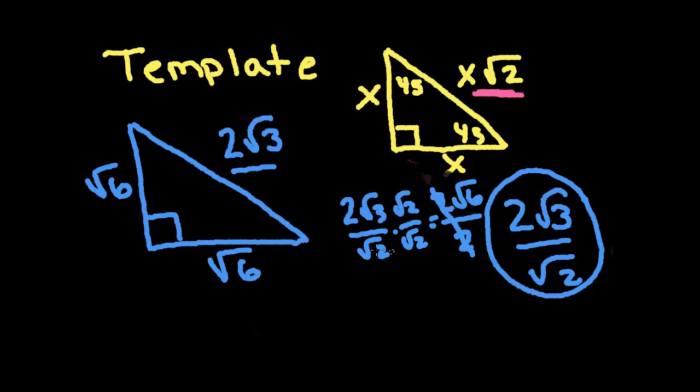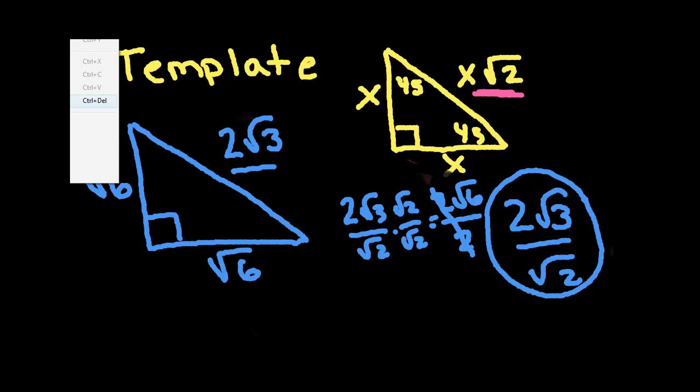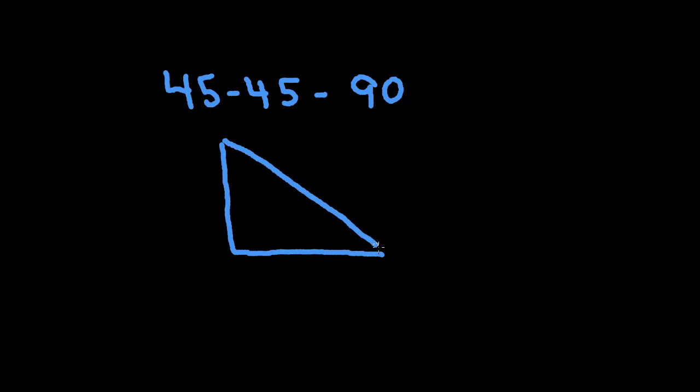So, that is the way we solve 45, 45, 90 right triangles. Memorize the template and just set the side equal to the piece of the template that you're given and solve for x.